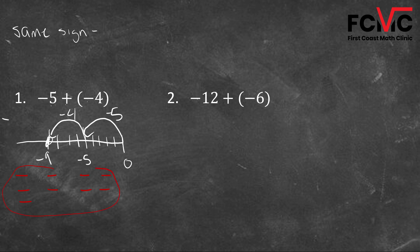We have five negatives and four negatives. How many total negatives do we have? We don't have any negatives that will cancel out — if we had a negative and a positive, they would cancel each other out. But we just have nine negatives total. So our answer here is negative nine. We added five and four to get nine, and the sign stays the same.